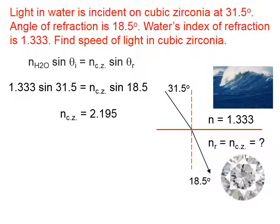we get cubic zirconia to have an index of refraction of 2.195. And we would expect an index of refraction for cubic zirconia that is larger than the 1.333 index for water, because we're told that the light bends toward the normal, so we're expecting a bigger index of refraction for cubic zirconia.